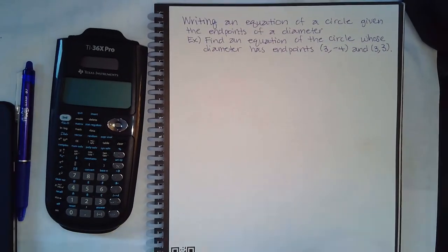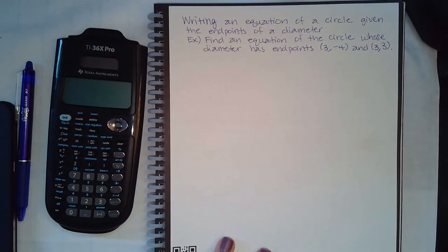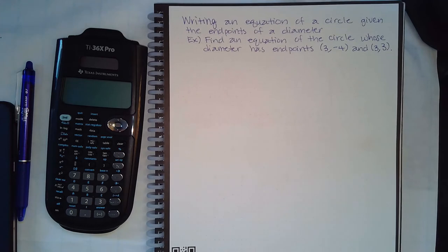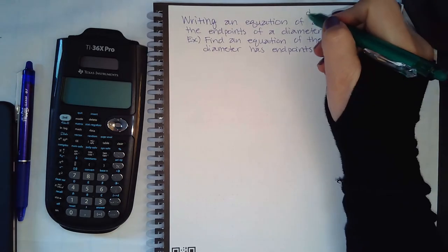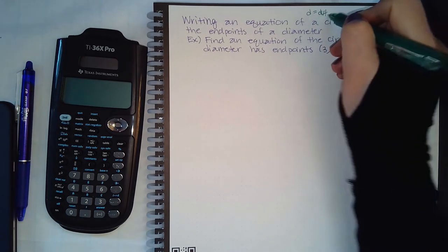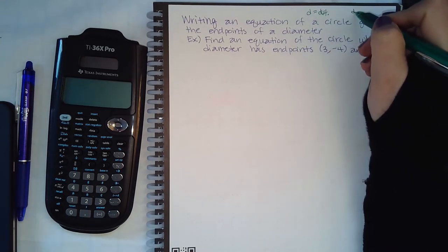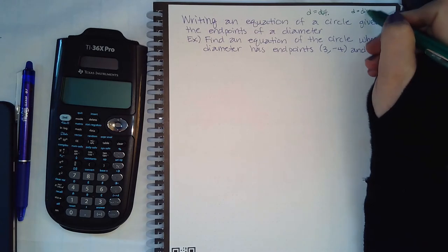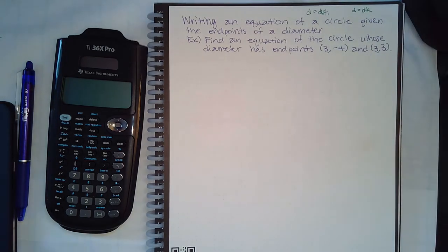Now we're writing an equation given the endpoints of a diameter. Be careful with your d's here — there's d for distance and d for diameter. Write 'dist' for distance and 'dia' for diameter to distinguish between them. You can also just use the full words if you prefer.